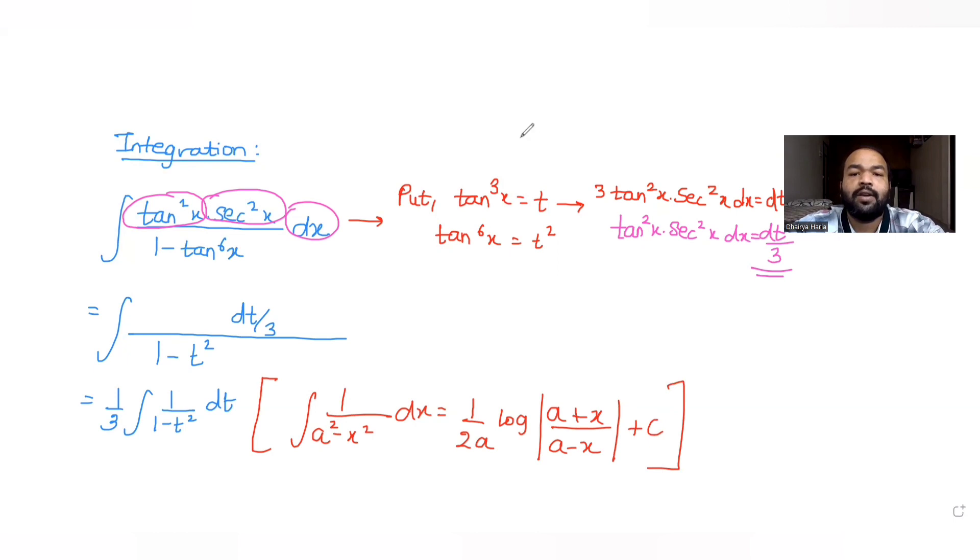Using this formula here, I can write this as 1/3 times 1/2, since a² is 1². This gives 1/6 log|(1 + t)/(1 - t)| plus C.